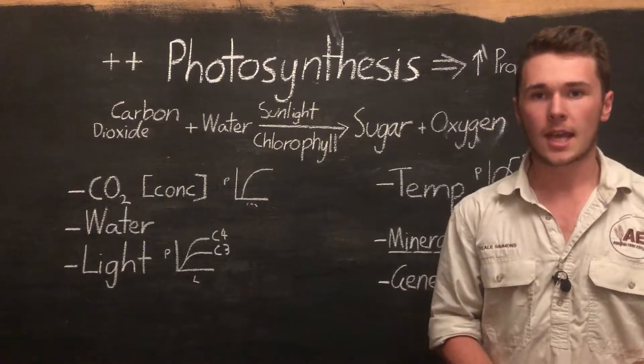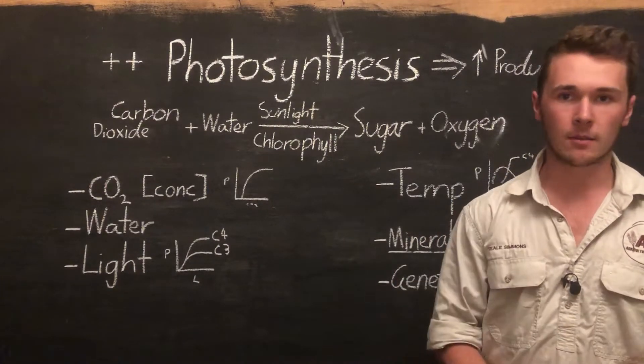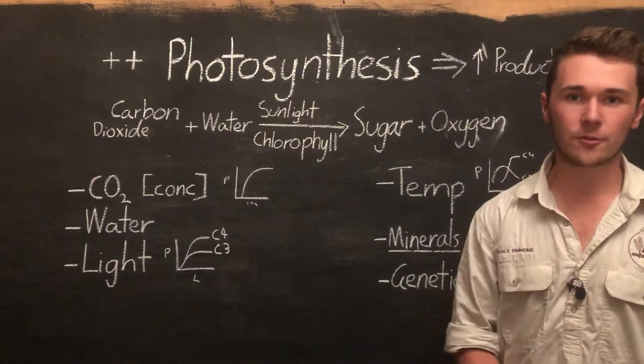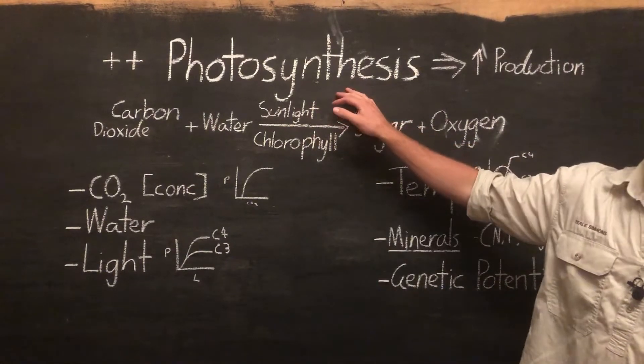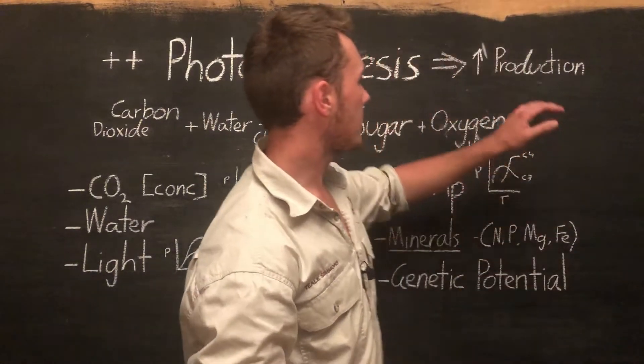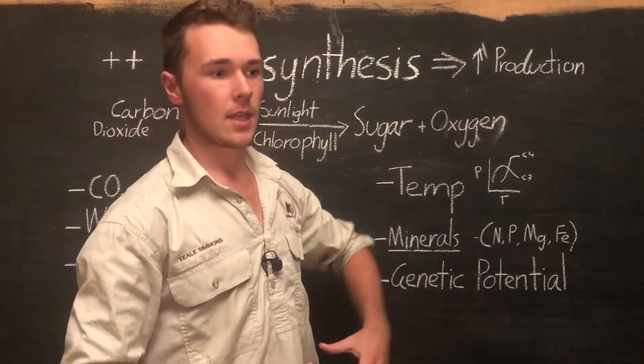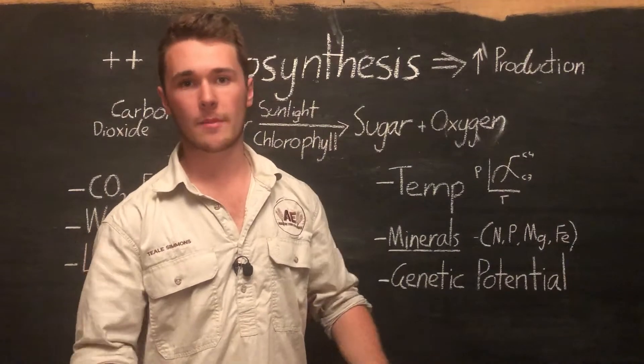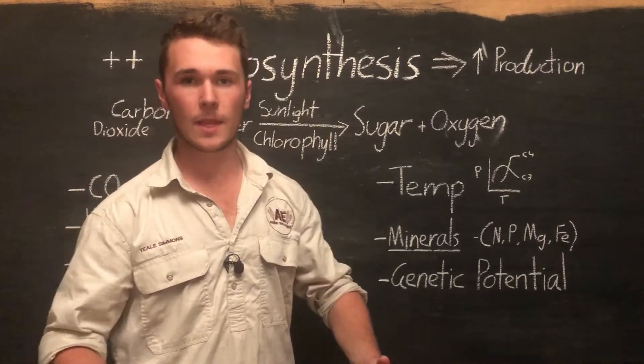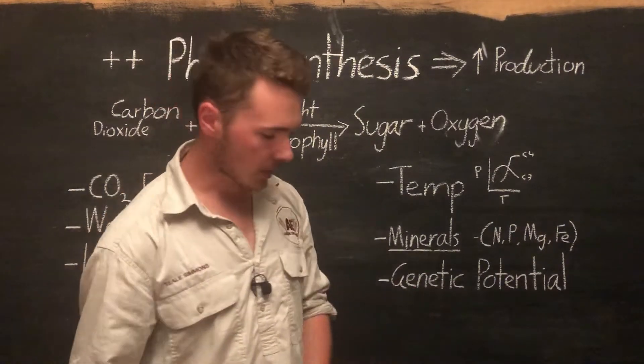As a result, we can say that when we increase photosynthesis, we're going to increase production. When we increase the amount the plant can grow by, we'll have more biomass to produce. So now the question becomes: how can we increase photosynthesis?